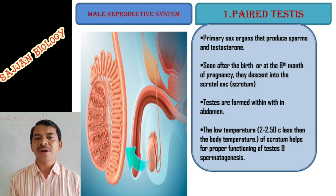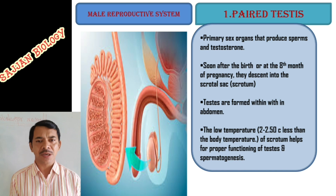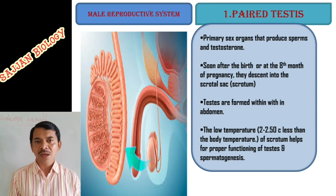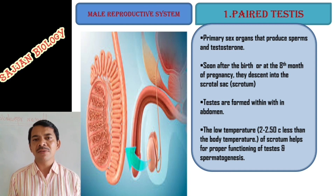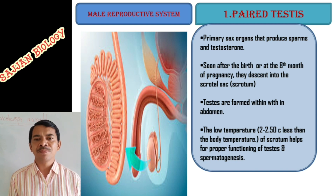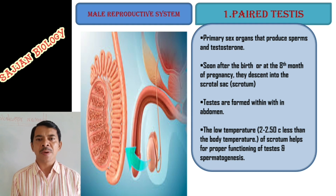The scrotum maintains a temperature 2 to 2.5 degrees Celsius lower than that of body temperature. Normal body temperature is 37 degrees Celsius. The scrotum maintains this lower temperature because it is very essential for the spermatogenesis process, that is, sperm production.